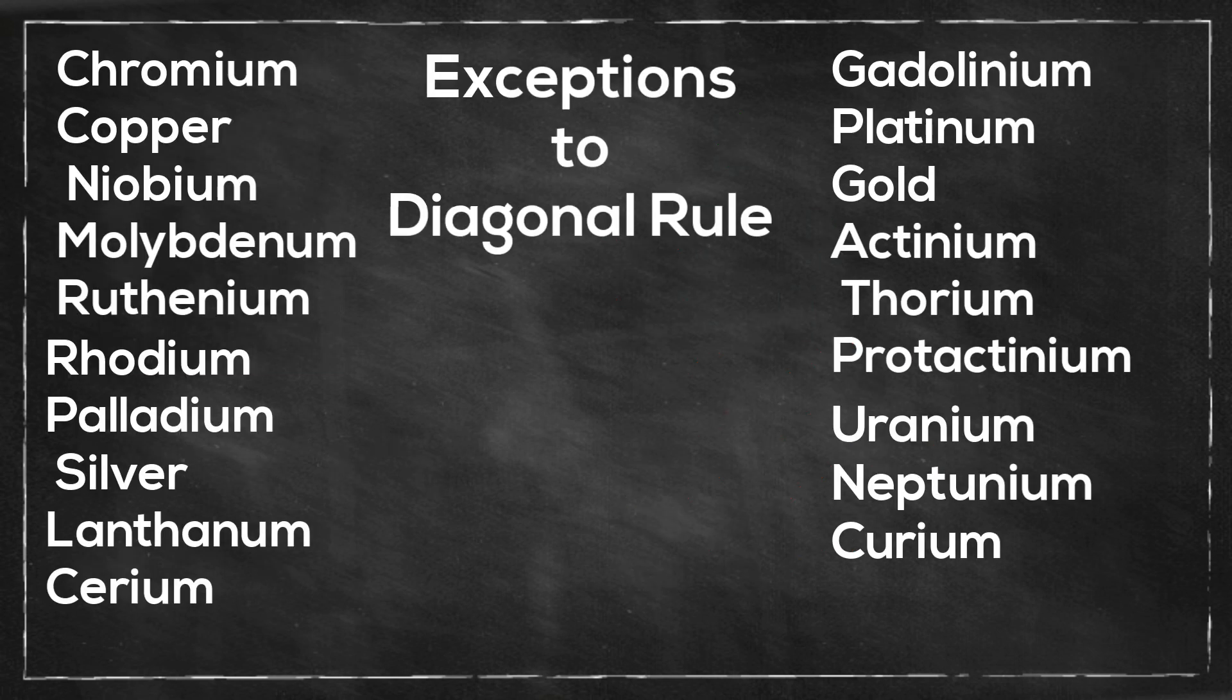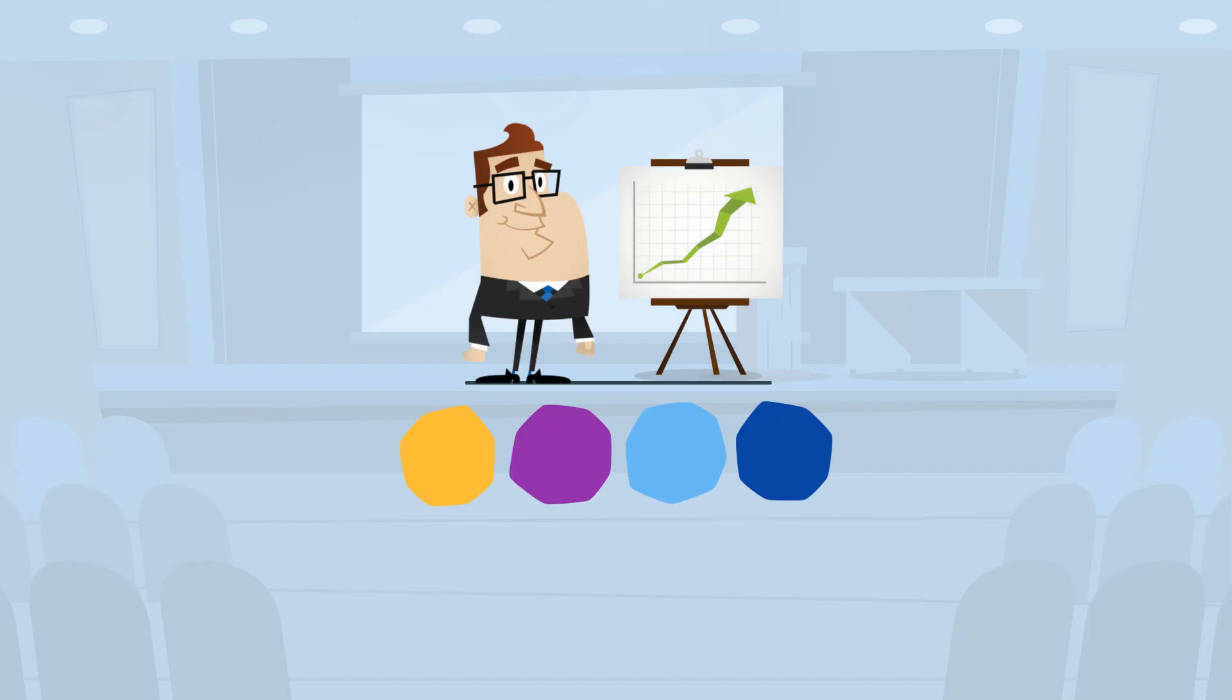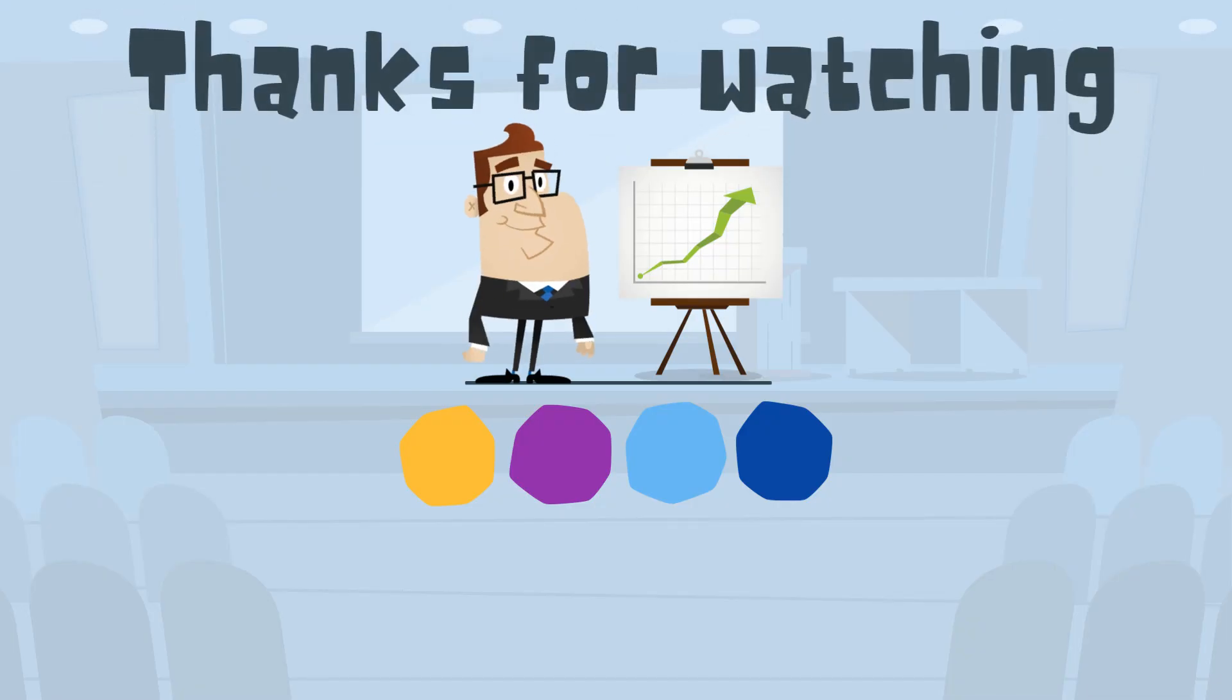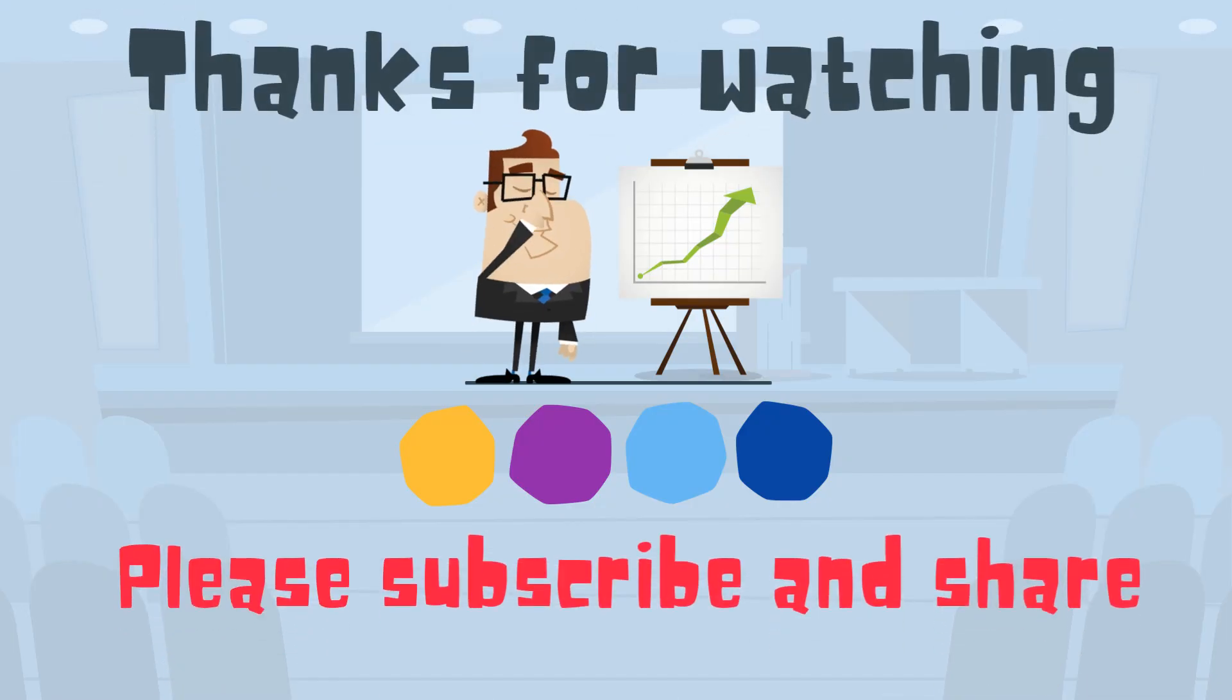If you'll notice, here are the exceptions to the diagonal rule, and I hope that helps with the electron configuration of chlorine and argon. Thanks for watching, and MooMooMath uploads a new math and science video every day. Please subscribe and share.